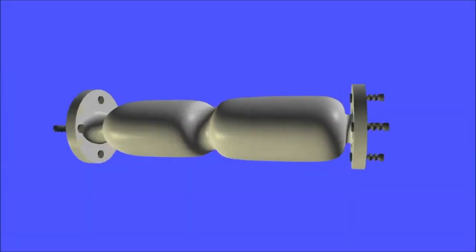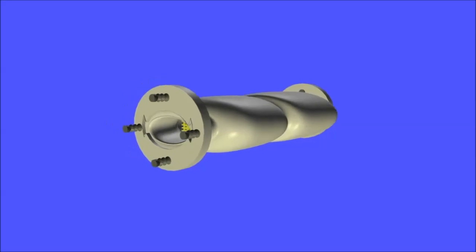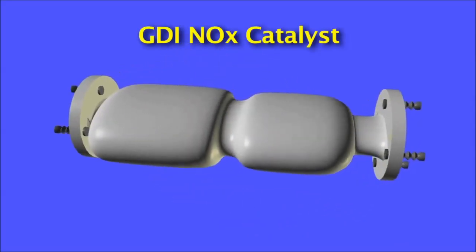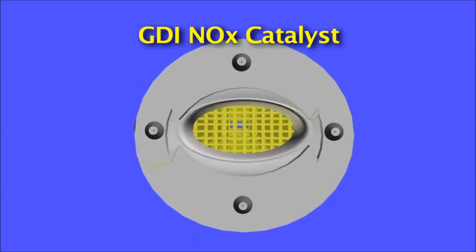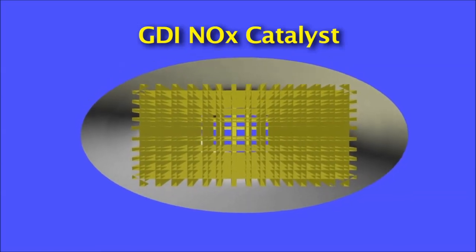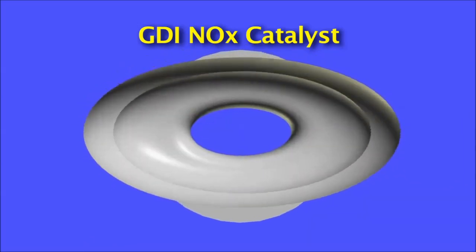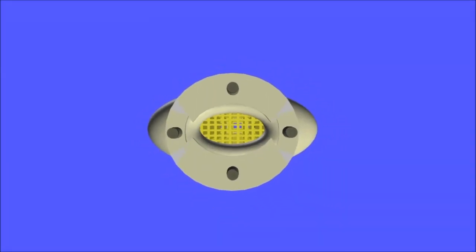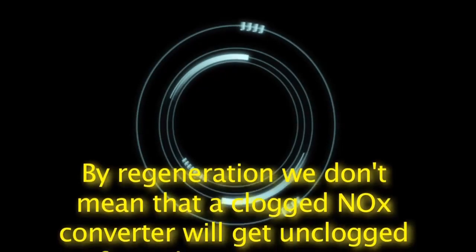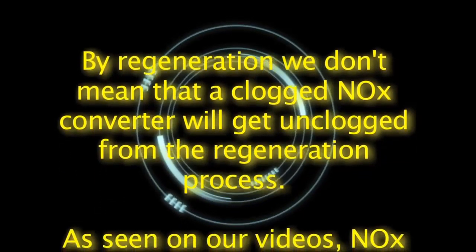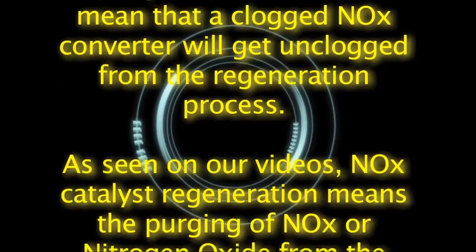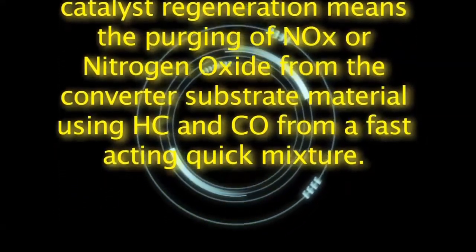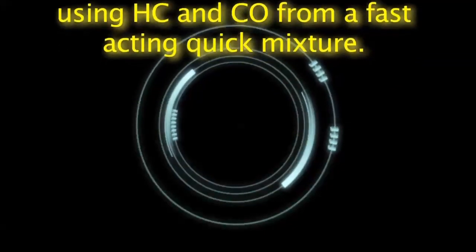GDI Erroneous NOx Codes: Since the introduction of the NOx catalytic converter and the GDI engine, there have been various issues with this component. Almost all issues with the NOx catalyst are related to another system that prevents it from being regenerated. By regeneration, we don't mean that a clogged NOx converter will get unclogged — NOx catalyst regeneration means the purging of NOx or nitrogen oxide from the converter substrate material using HC and CO from a fast-acting rich mixture.